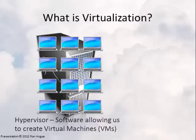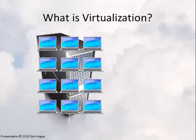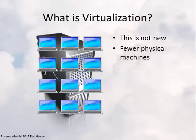This idea of putting multiple machines on one isn't anything new — we've been doing this for decades with mainframes and dumb terminals. Virtualization allows us to have fewer physical machines. In the example shown here, one server replaces 12 physical machines. With fewer physical machines to purchase, I've now lowered my capital expenditures. Instead of having to buy 12 machines, I only had to buy one.